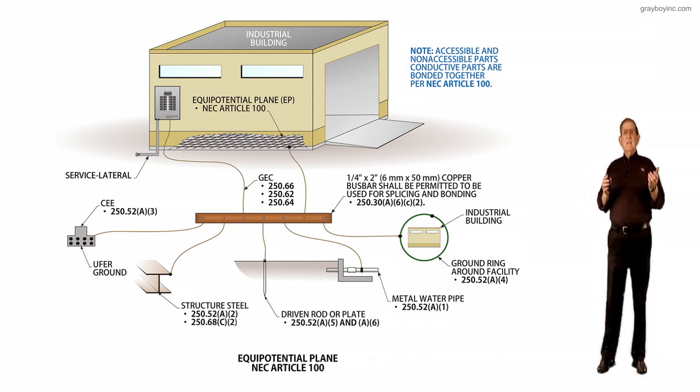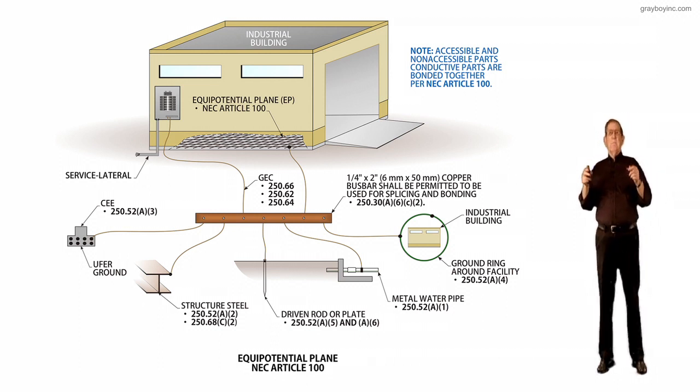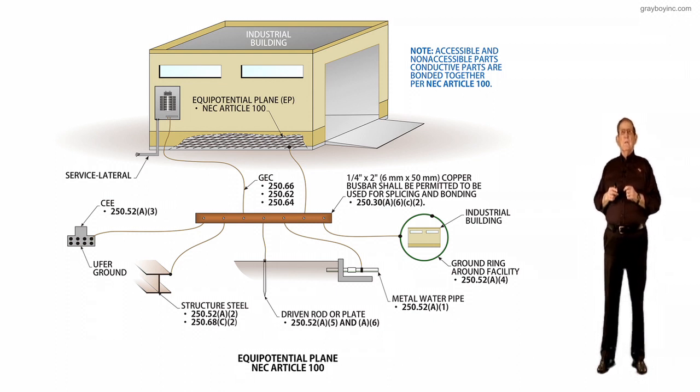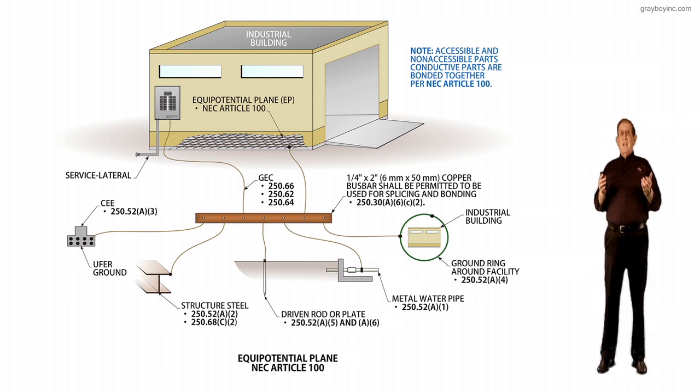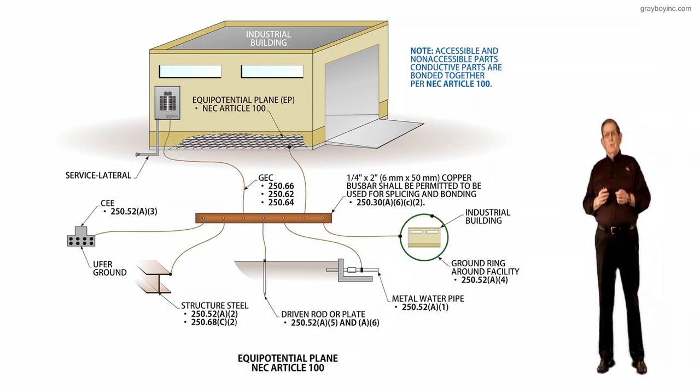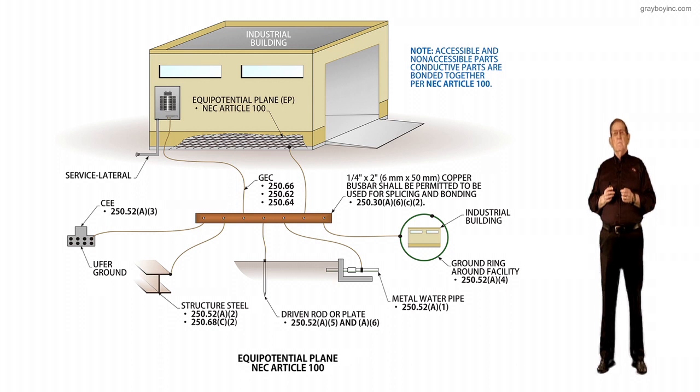Article 680.26 deals with an equal potential type plane for swimming pools. Article 682 or Section 682.33 would deal with areas of where beds of water are and so forth.